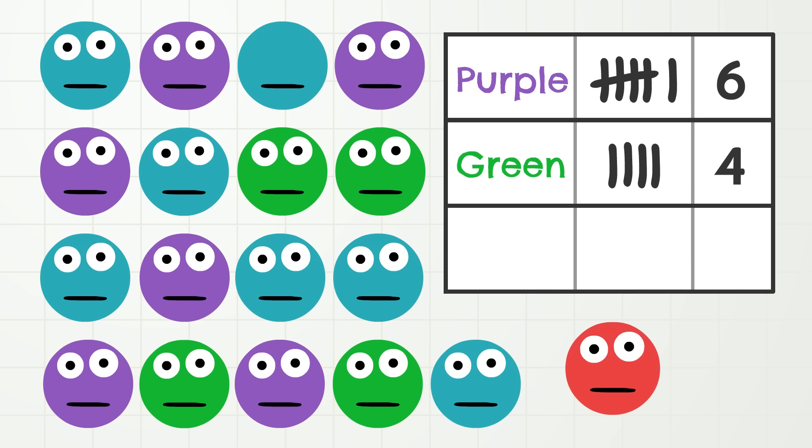And finally, how many brothers and sisters are blue? Let's count. One, two, three, four, five, six, seven! Seven!